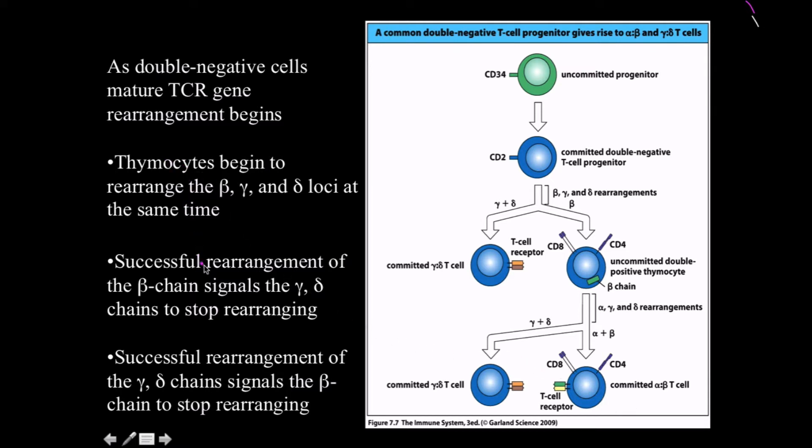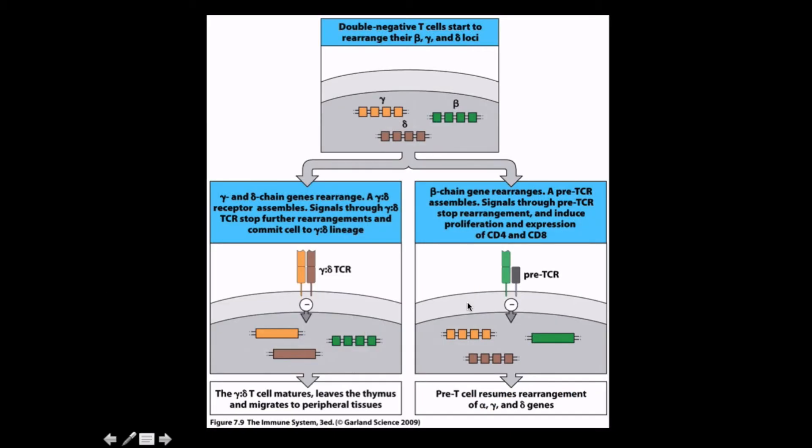So successful rearrangements of the beta chain signal the delta-gamma chains to stop rearranging, and successful rearrangements of the delta-gamma chains signal the beta chain to stop rearranging. We can have CD8 and CD4 on the same thing, but we're not going to have alpha-beta and delta-gamma T cell receptors present at the same time. That's pushing things a little bit too far.